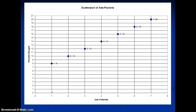Here's an example scatter plot of ads and packets: ads watched versus packets bought. For subject 1 and subject 2, 2 ads watched and 10 packets bought, and so on. This is simply a scatter plot for ads to packets.